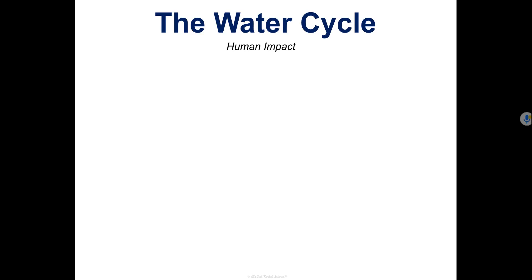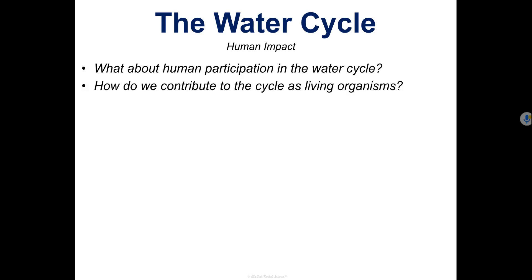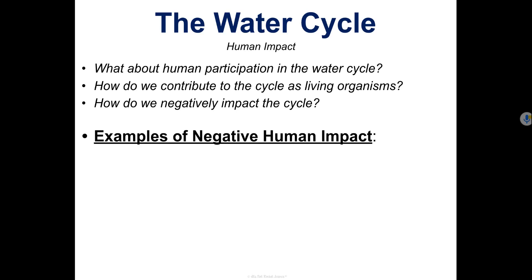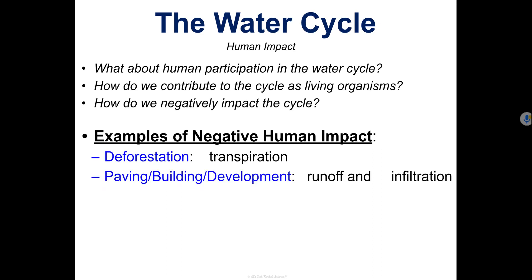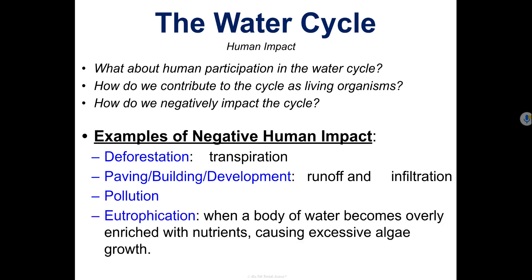We'll finish this video by talking about human impact on the water cycle. There are several ways that humans can negatively impact the environment. One is deforestation, another is paving or building new roads, bridges, and buildings, another is pollution, and the last is eutrophication — that's when a body of water becomes overly enriched with nutrients and causes excessive algae growth.